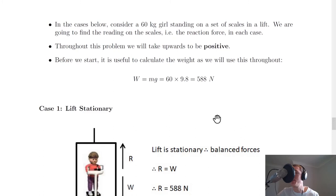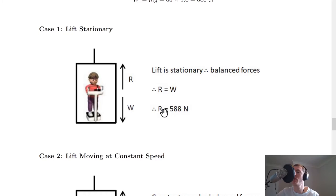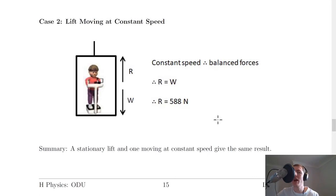Case 1: the lift is stationary. With a free body diagram showing reaction force upwards and weight downwards, and the lift not moving, we have balanced forces. Therefore the reaction force R equals the weight: R = 588 newtons.